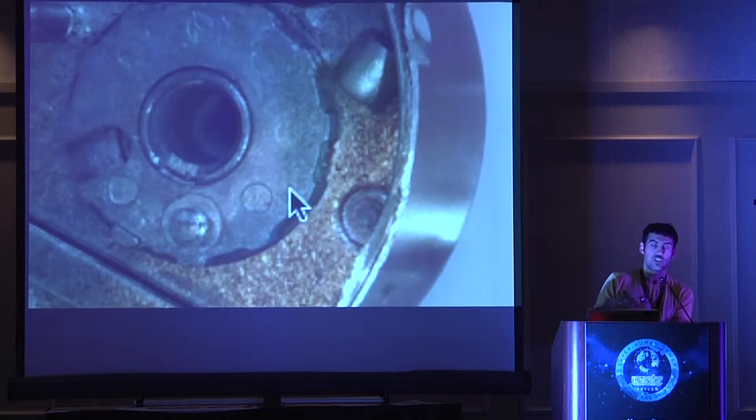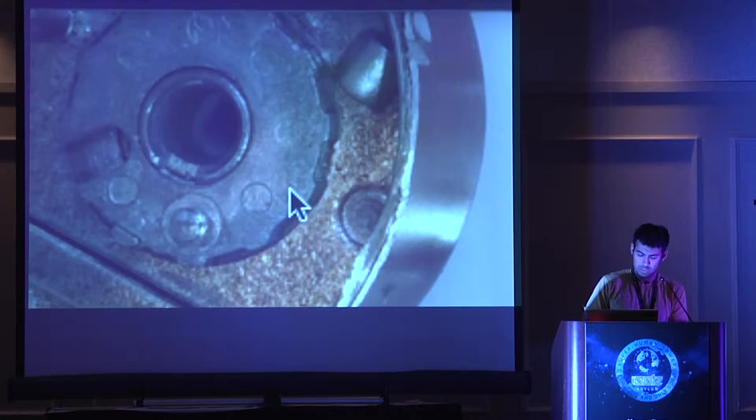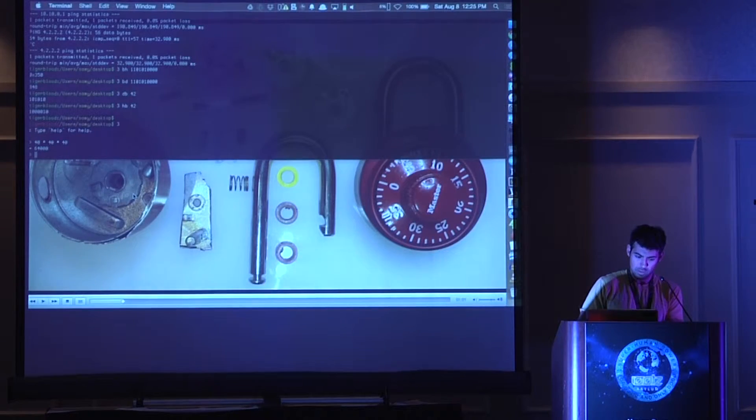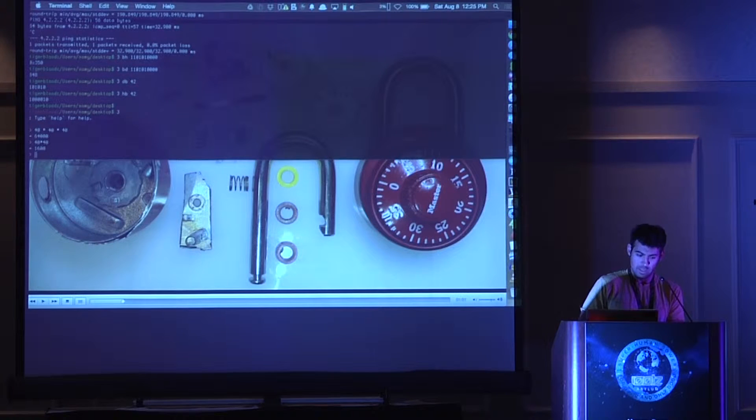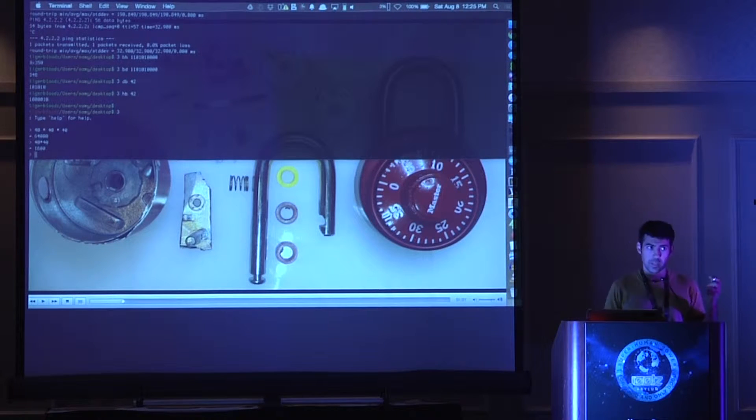That groove is related to the third number. So once you feel that, you actually just learn what the full third number is. That would reduce your 64,000 possibilities to 40 times 40, bringing you down to 1,600. That's been known for a while.